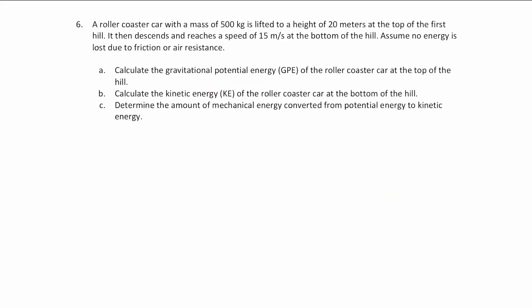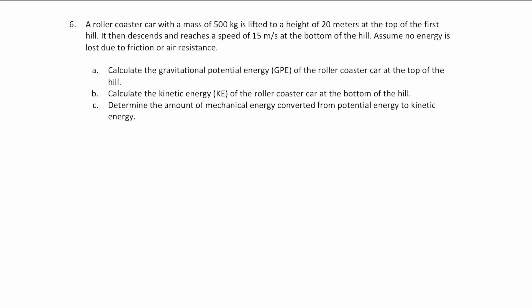The last question is about energy being transferred. A roller coaster car with a mass of 500 kilograms is lifted to a height of 20 meters at the top of the first hill. It then descends and reaches a speed of 15 meters per second at the bottom. Assume no energy is lost due to friction or air resistance. Calculate: A) the gravitational potential energy at the top; B) the kinetic energy at the bottom; C) the mechanical energy converted from potential to kinetic.